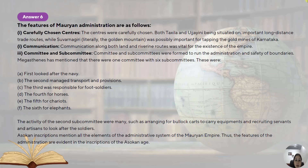Communication was along land as well as water routes, which was very important for the flow of information across the empire. Committees and subcommittees were formed to run the administration and safety of boundaries. As per the book Indica, written by Megasthenes, there was one committee with six subcommittees: the first looked after the navy, the second managed transport and provisions, the third was responsible for the foot soldiers or infantry, the fourth for the horses, the fifth for chariots, and the sixth for the elephants. The activities of the second subcommittee included arranging bullock carts to carry equipment and recruiting servants and artisans to look after the soldiers.